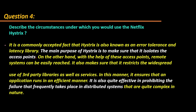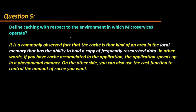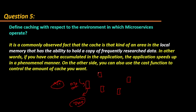Next question: define cache with respect to the environment in which microservices operate. For example, if you have four microservices and you're implementing an OTP service — your authentication service generates an OTP and on the basis of that OTP generates a JWT token — all other services need to validate that JWT token. Cache is a kind of area in local memory that has the ability to hold a copy of frequently accessed items.